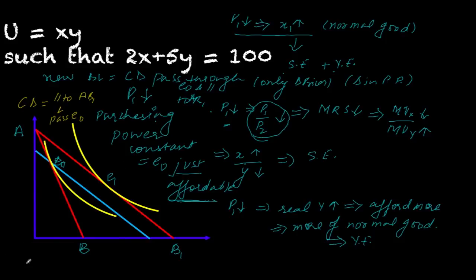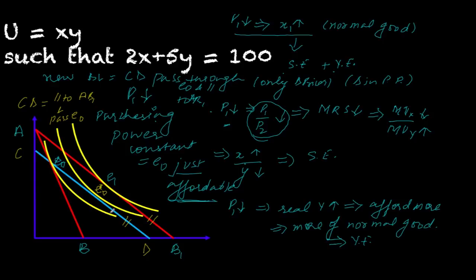The blue line passes through e0 and is parallel to AB1 — let's call this line CD. We draw an IC tangent to CD and call that point e0-dash. So the movement from e0 to e0-dash is the substitution effect, because CD makes e0 just affordable (purchasing power constant) and CD is parallel to AB1 (prices constant). The movement from e0-dash to e1 is the income effect.